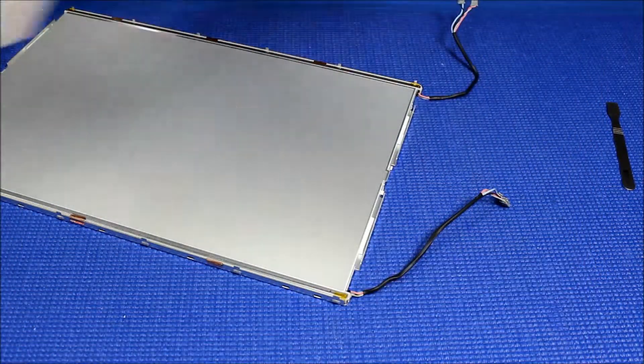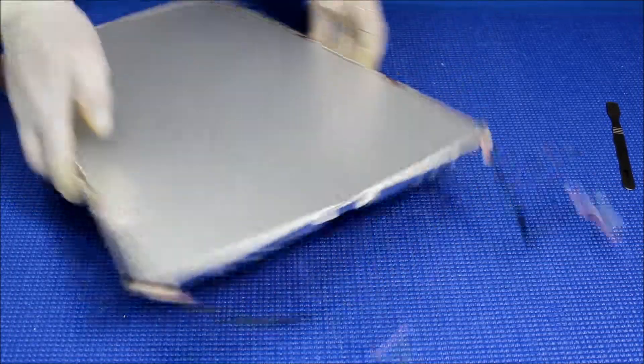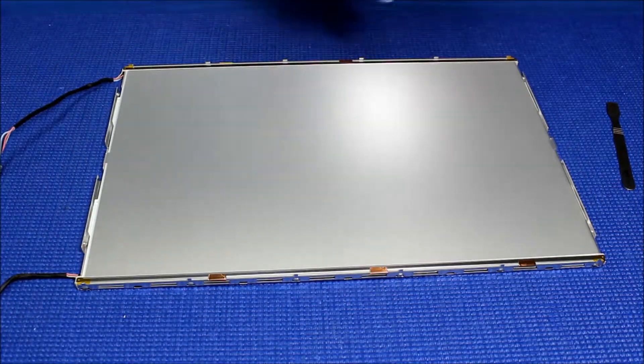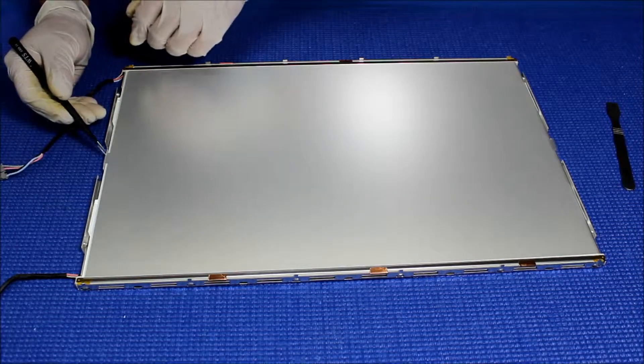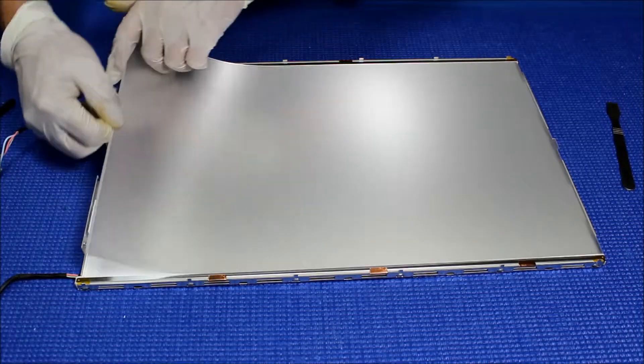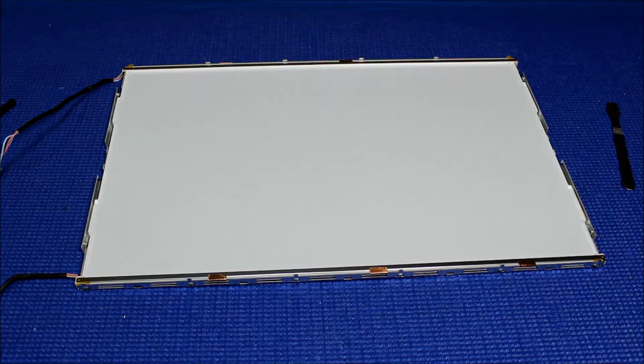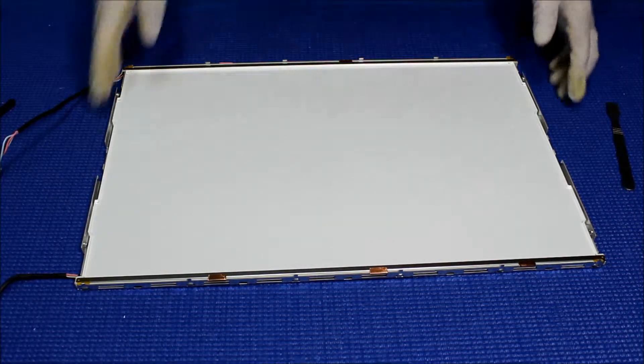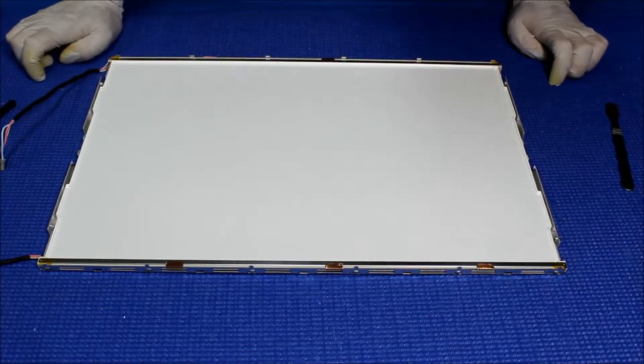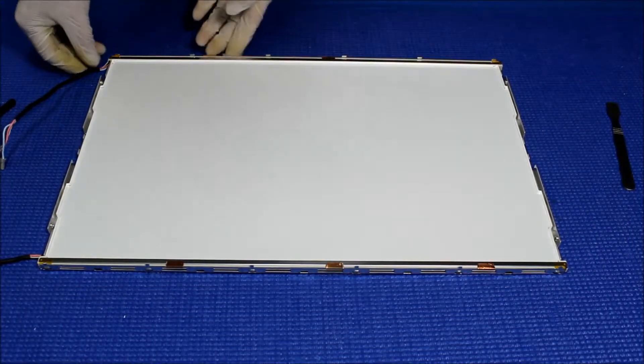All right, we took it out already. Let's take a look here. First thing, we're going to get the whole stack of diffusion sheets. Don't worry about it, there's a marking. I'll get a tape like this and set it on top of the liquid glass.